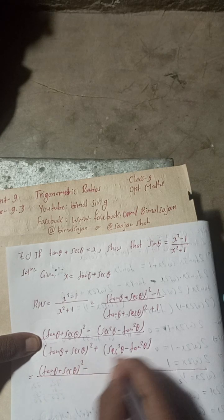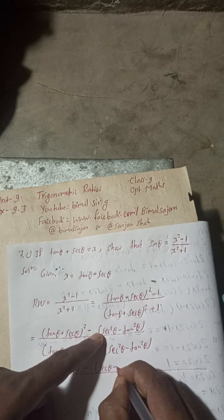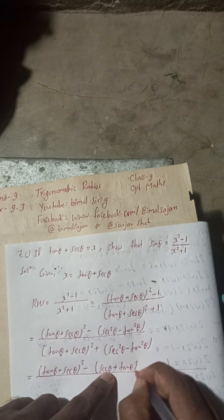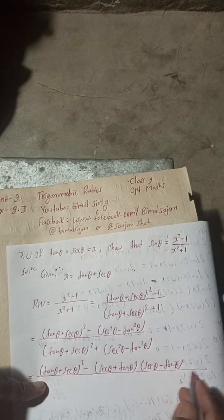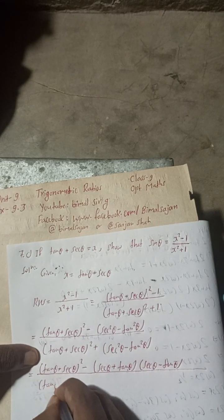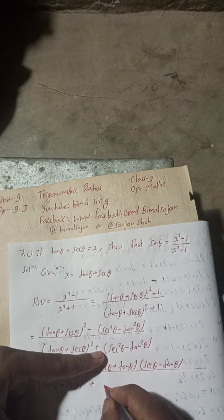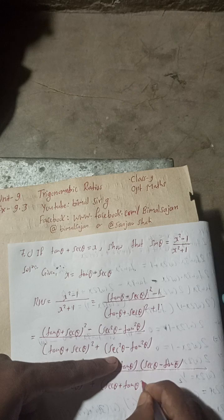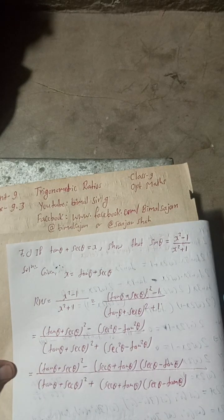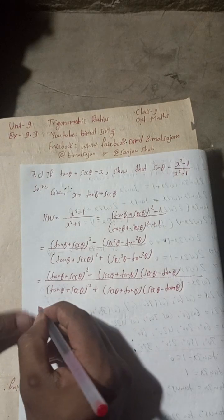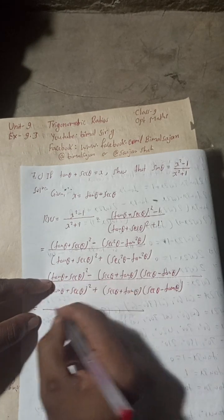Now from here we take (tan θ + sec θ)² as it is, and now this sec²θ - tan²θ is an a² - b² form. So I will write it as (sec θ + tan θ)(sec θ - tan θ). This is the a² - b² = (a+b)(a-b) formula. In the denominator we do the same: (tan θ + sec θ)² plus (sec θ + tan θ)(sec θ - tan θ).